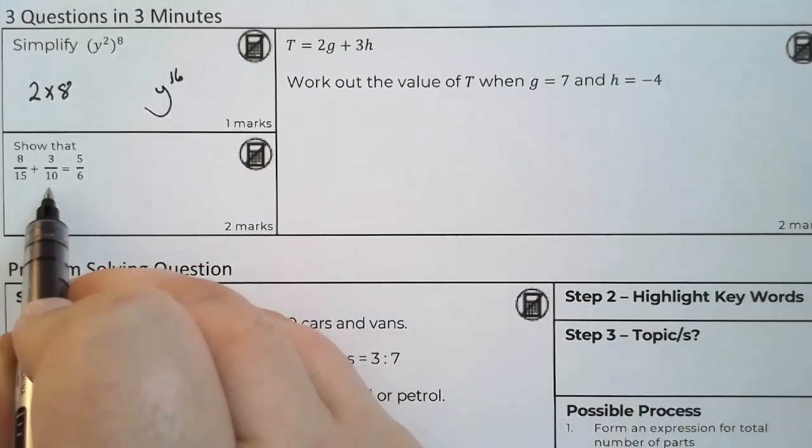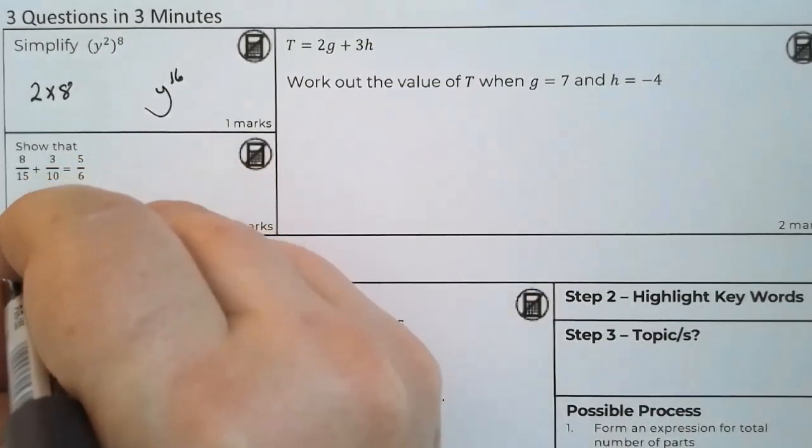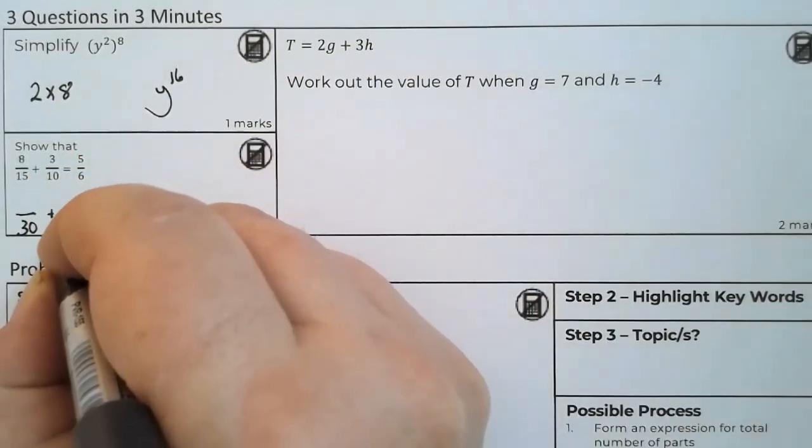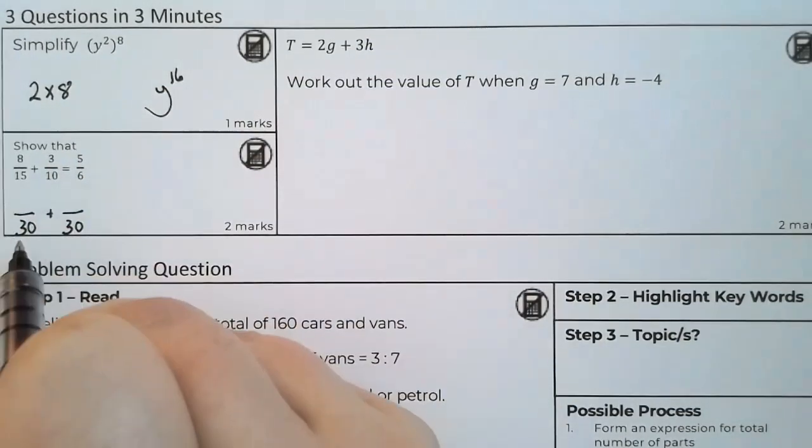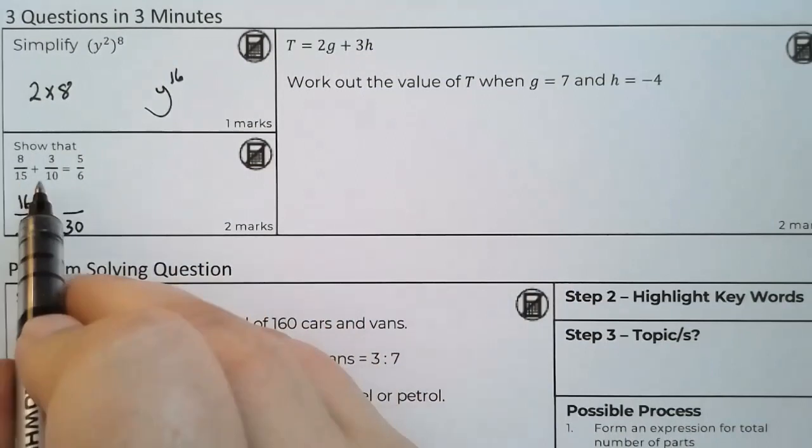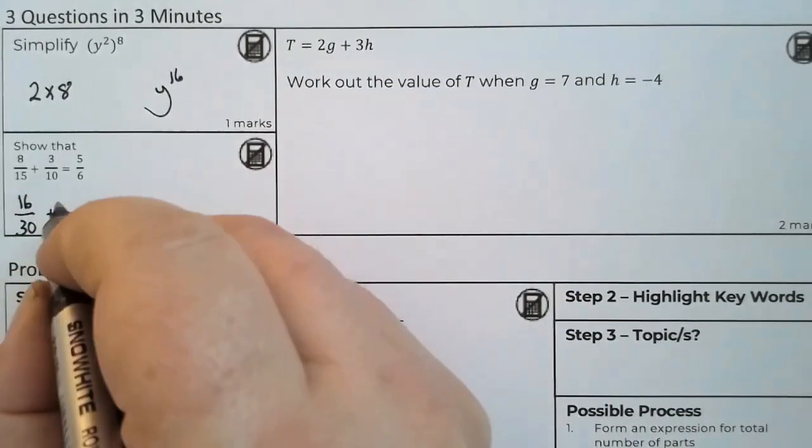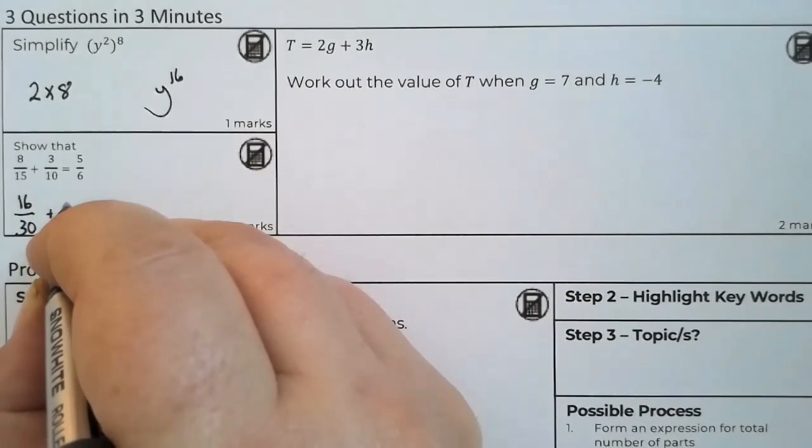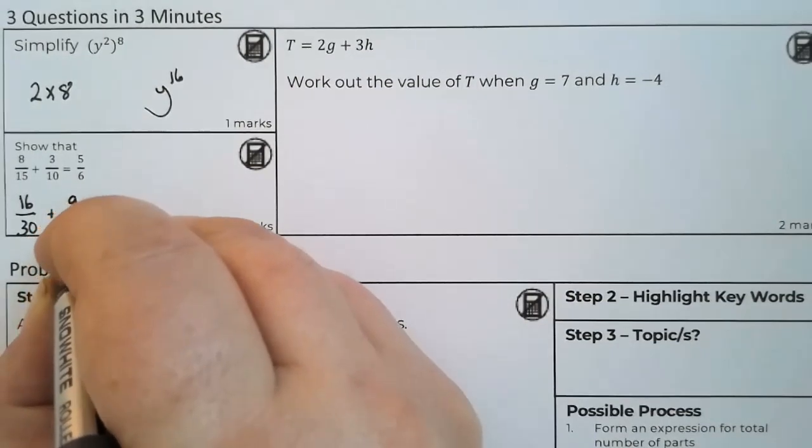Common denominator, we're looking at 30. 15 multiplied by 2 is 30, so 8 multiplied by 2. 10 multiplied by 3 is 30, so 3 multiplied by 3 is 9.